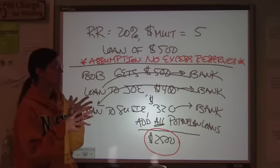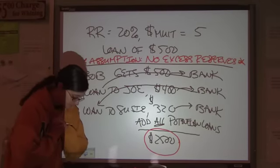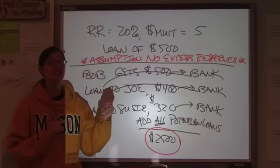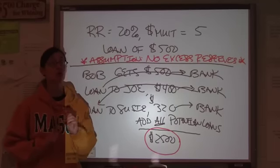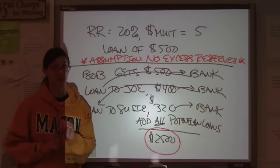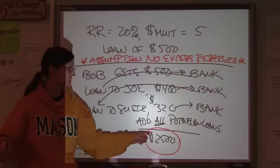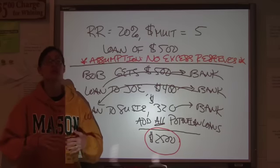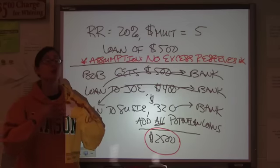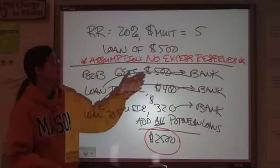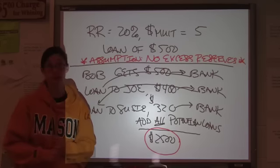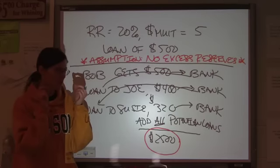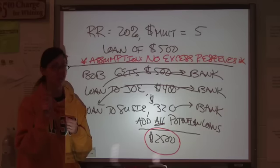So, the potential total increase is the initial loan times the multiplier. Now, if you have a question that says, how much additional money is created from that loan? Additional meaning above the $500, you would say $2,000. If it says, how much money in total is created, you would keep that loan amount in there, and it would be $2,500. Depends on the wording of the question, and you've got to be careful with that.